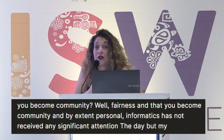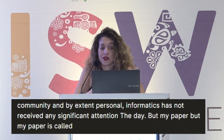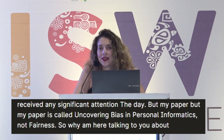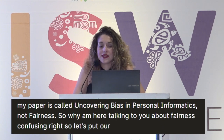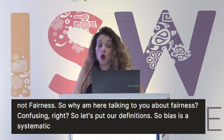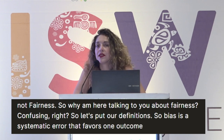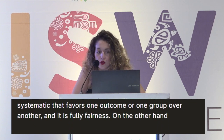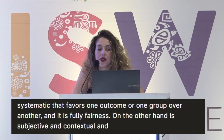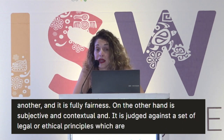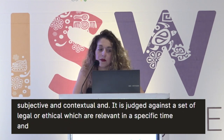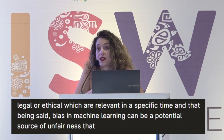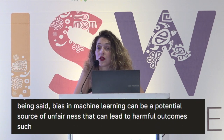My paper is called Uncovering Bias in Personal Informatics, not Fairness. So why am I talking to you about fairness? Let's put our definitions straight. Bias is a systematic error that favors one outcome or one group over another, and it is fully quantifiable. Fairness, on the other hand, is subjective and contextual, judged against a set of legal or ethical principles relevant to a specific time and place. Bias in machine learning can be a potential source of unfairness that can lead to harmful outcomes such as discrimination, depending on the context.